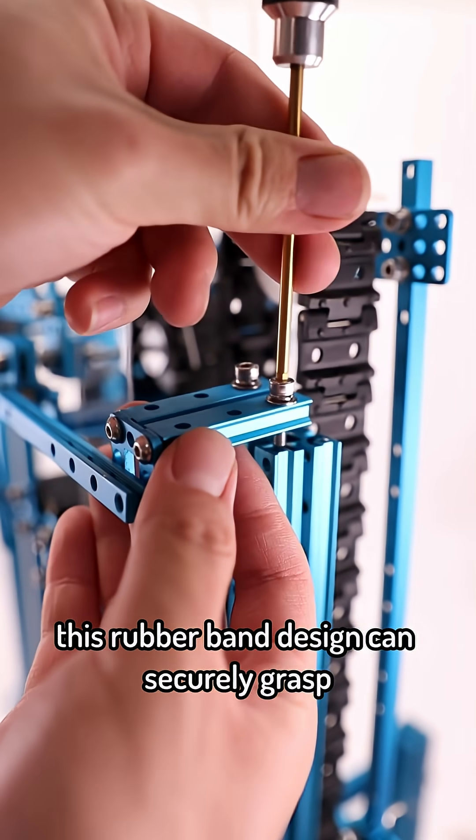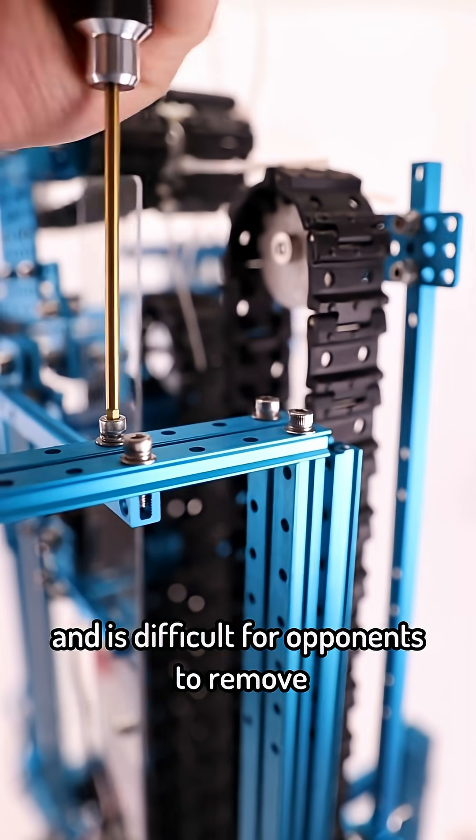This rubber band design can securely grasp onto the aluminum frame and is difficult for opponents to remove.